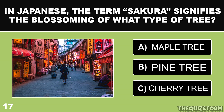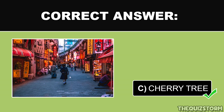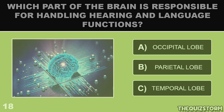In Japanese, the term sakura signifies the blooming of what type of tree? And the correct answer is cherry tree.